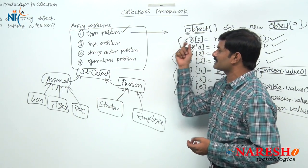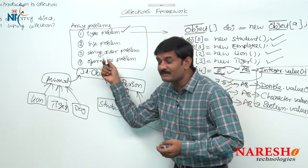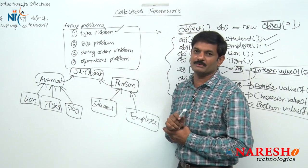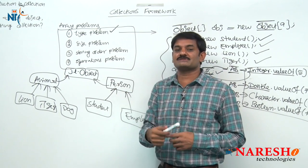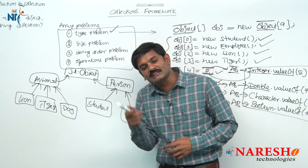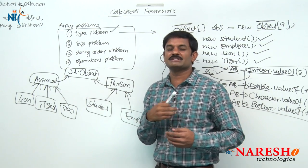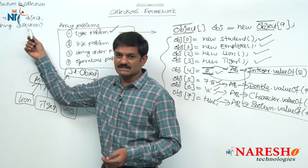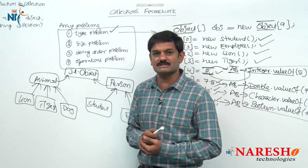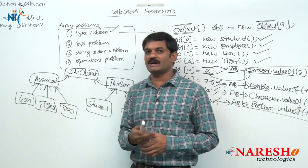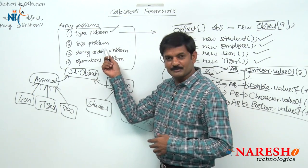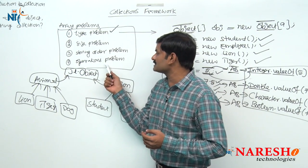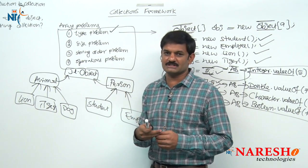But just by using an Object array, you cannot solve the size problem, the storing order problem, and the operations problem. For that, every programmer in the project would have to write additional code. Instead of all programmers writing that code independently, what came into picture? Collection. Sun Microsystem developed the collection framework. Now it is time to understand: what is the size problem and how it can be solved, what is the storing order problem, and what is the operations problem.